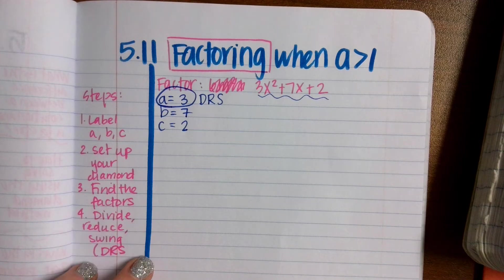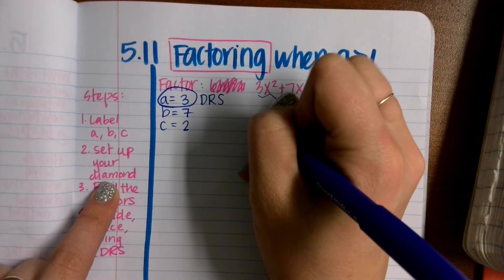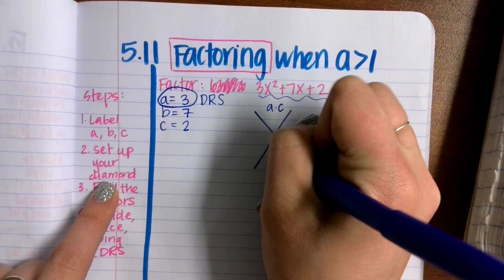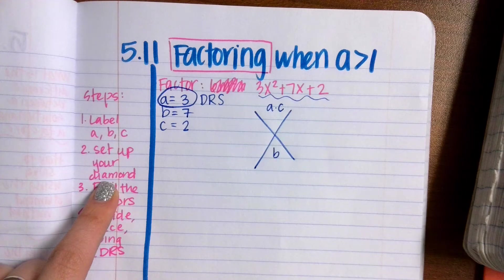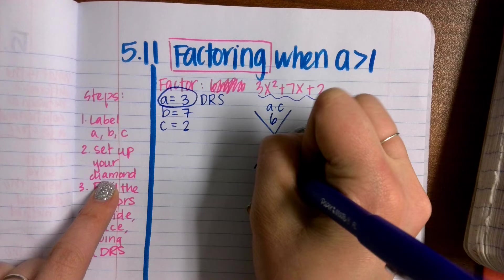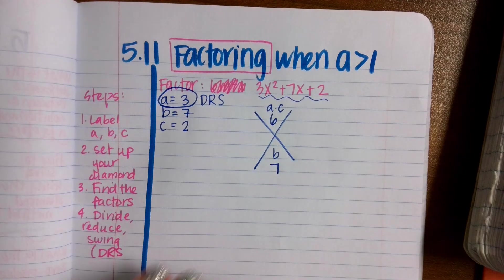Now we need to set up our diamond. Step number 2. A times C goes on the top, B goes on the bottom. A times C is 6, and B is 7. We're looking for factors of 6 that add to be 7. Positive 1, positive 6.